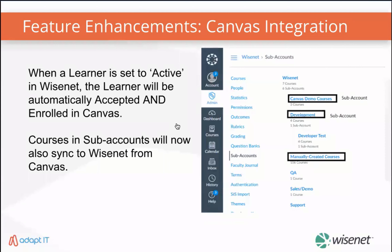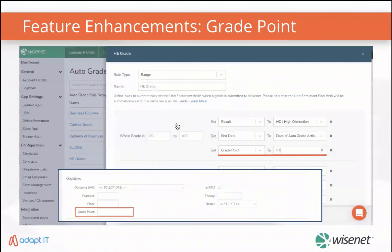Courses in subaccounts will also sync to Wisenit from Canvas. A new field called grade point has been added to the unit enrollment gradebook unit update section. This allows a specific grade point value to be entered against a unit enrollment. This has also been added to the auto grade feature, allowing it to be set as part of the e-learning grade sync.